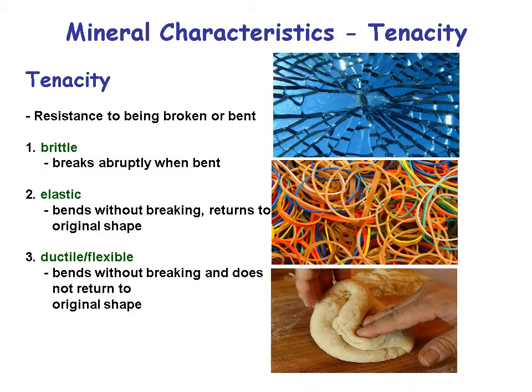Tenacity describes how resistant a mineral is to being broken or bent. If it's brittle, it just breaks as soon as you try to bend it. If it's elastic, it can bend without breaking and returns to its original shape — like a rubber band. It can also be ductile or flexible, meaning it bends without breaking but does not return to its original shape. Lead is a good example of a mineral that bends but doesn't spring back.